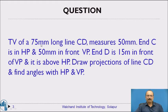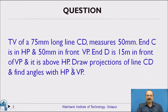The problem: the top view of a 75 mm long line CD measures 50 mm. C is in HP and 50 mm in front of VP. D is 15 mm in front of VP and it is above HP. Draw the projection of line CD and find the angles with HP and VP.